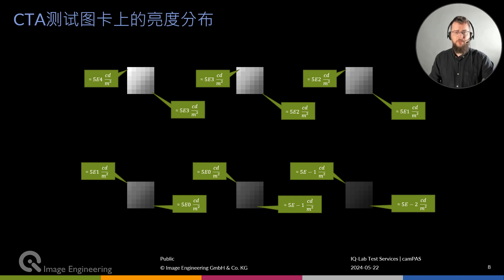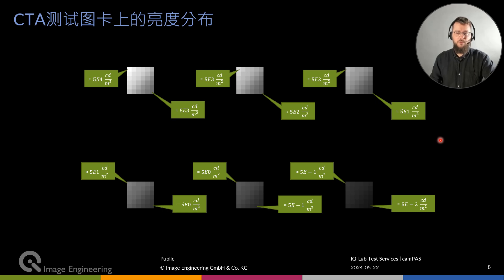A typical lab setup used to obtain CTA numbers consists of six VEGAs — called VLS for versatile light source. We present the camera with a situation covering a luminance range or dynamic range of over 120 dB, typically starting around 50 Kcd per square meter and going as low as 0.05 Kcd per square meter. With this setup, we can generate the CTA heatmap seen on the previous slide.